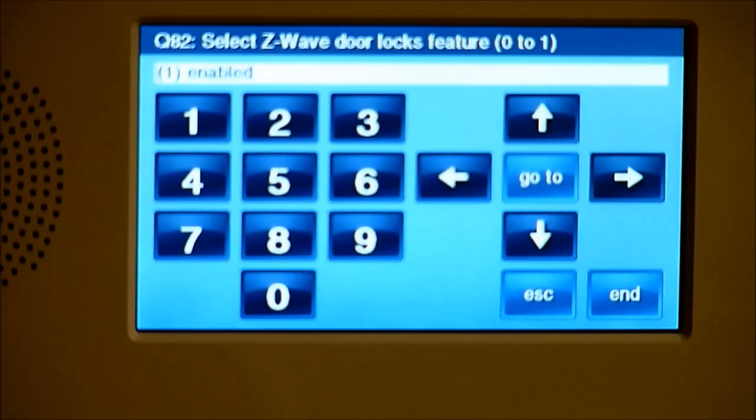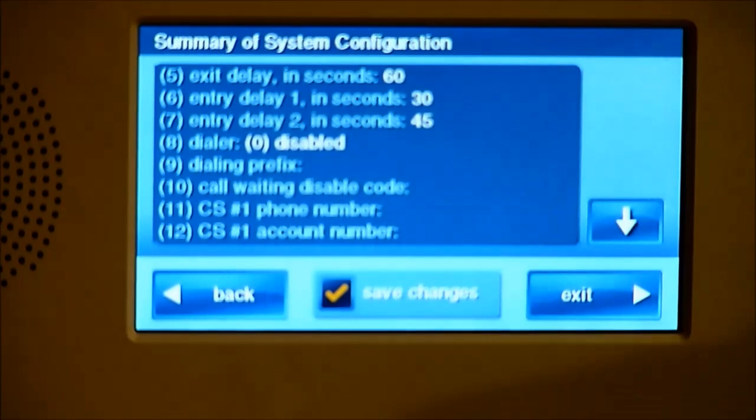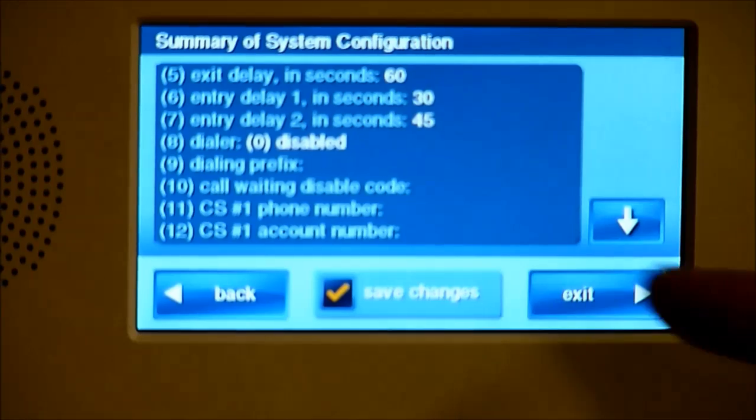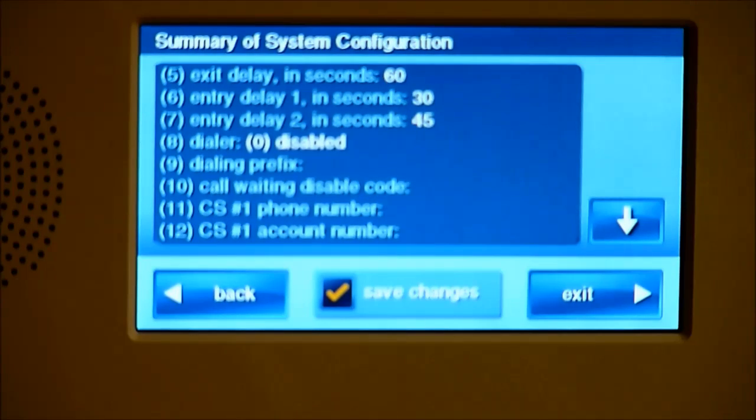So now that we're done turning on the Z-Wave feature as well as enabling the lights, locks, and thermostat features on here, we want to go ahead and hit End, and then Exit. And everything will power down and reboot and save our changes.